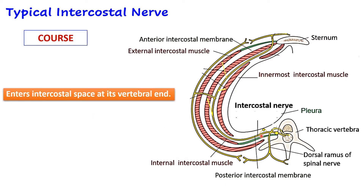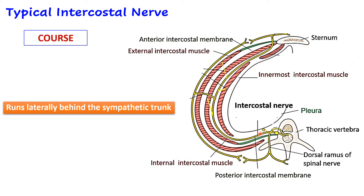The typical intercostal nerve enters the intercostal space at its vertebral end. It then runs laterally behind the sympathetic trunk — you can see a sympathetic ganglion here. It then runs more laterally between the pleura and the internal intercostal membrane (or posterior intercostal membrane), which is a fibrous continuation of the internal intercostal muscle.